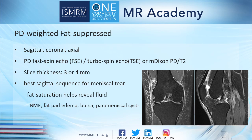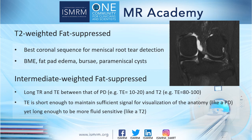In addition to the sagittal plane, axial and coronal fat-suppressed images provide related T2-high lesions and excellent anatomy. T2-fat-suppressed sequence is included as a replacement to the fat-suppressed proton density-weighted image in one plane, typically coronal. The fat-suppressed T2-weighted image is the best coronal sequence for meniscus root tear detection. It also reveals fluids such as bone marrow edema, fat pad edema, and meniscus cysts. Intermediate weighting uses a long TR and intermediate TE between proton density and T2 signals, with TE sufficiently short to maintain sufficient signal for anatomic visualization but sufficiently long to be more fluid-sensitive.